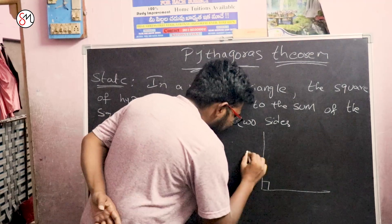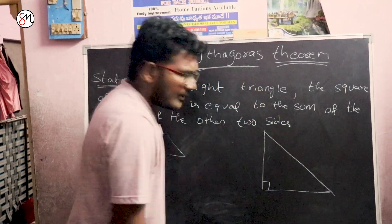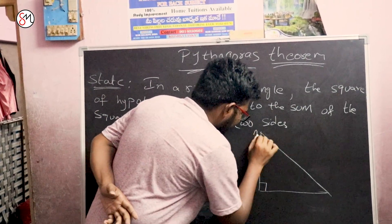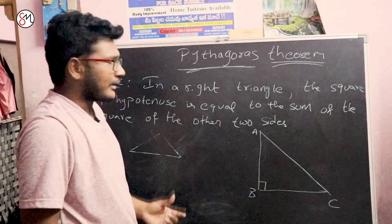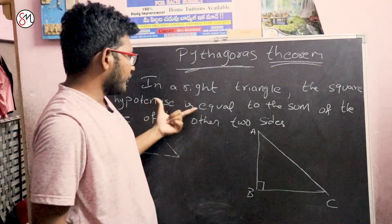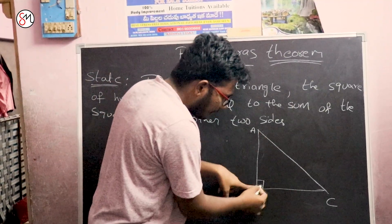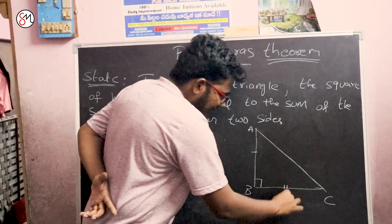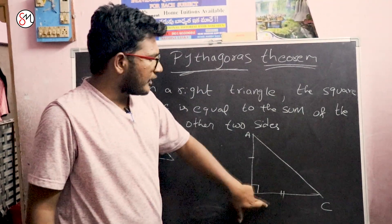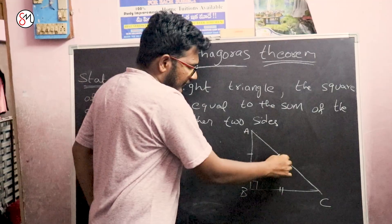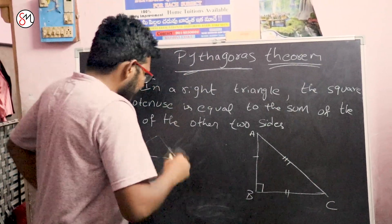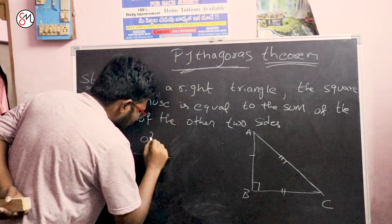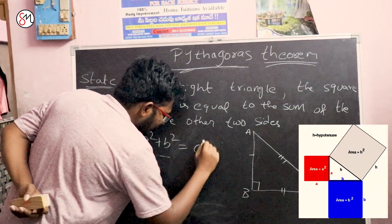Let's look at the sides here. This is the right angle triangle — this is side A, this is side B, and this is side C. The hypotenuse is opposite the right angle. These two sides, when squared and added, are equal to the square of the third side. So the formula is: A square plus B square is equal to C square.